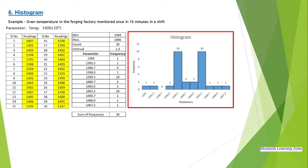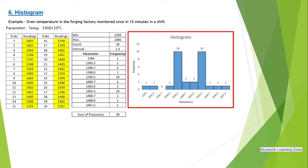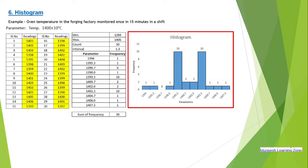The specification is 1400 plus or minus 10 degrees Celsius. On the right-hand side of the chart, we look at the frequency. That gives us the minimum and maximum values. Looking at the 30 readings, we check the spread. The interval is 1.3, and we look at the width of the chart.